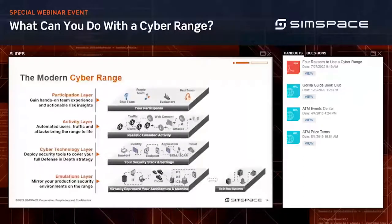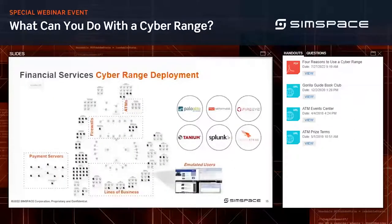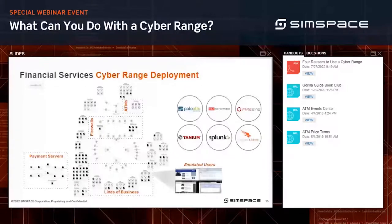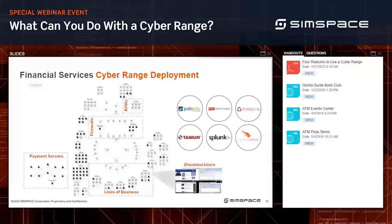We can tune emulated user traffic to fit what you'd expect in your enterprise environment. On top of that is our participation layer — where blue team, red team, or purple team and evaluators can all interact. A typical range might include firewalls, ATMs, line-of-business and payment servers for a medium-sized financial institution. We can integrate any solution the client uses — Splunk, Palo Alto, CrowdStrike Falcon — so that when you're running an exercise, it looks and feels like you're on your own network.